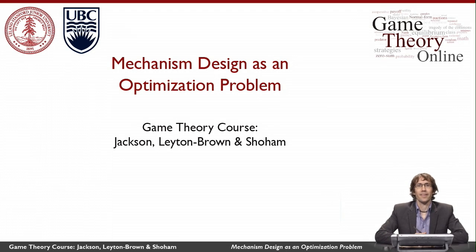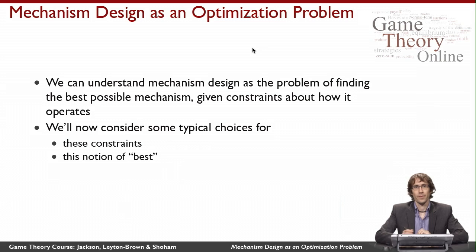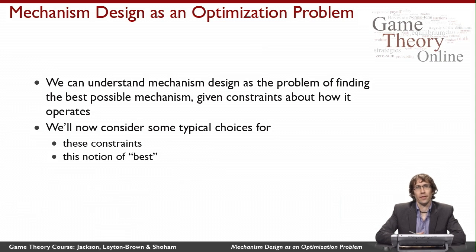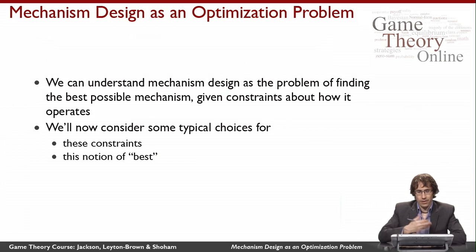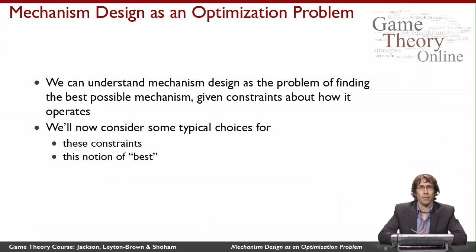This video is about how to see mechanism design as an optimization problem. In particular, we can understand the task of doing mechanism design as an optimization that asks us to find the best mechanism according to some definition of best, given various constraints about how the mechanism has to behave and what kinds of things it's allowed to do.